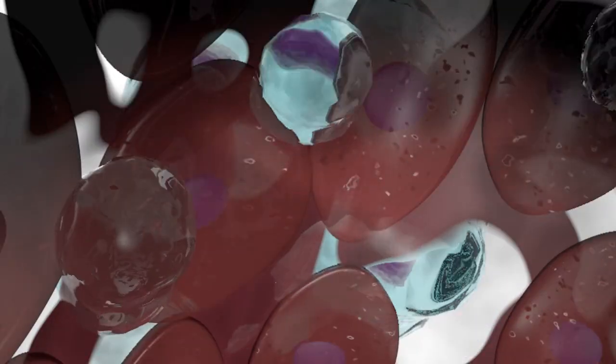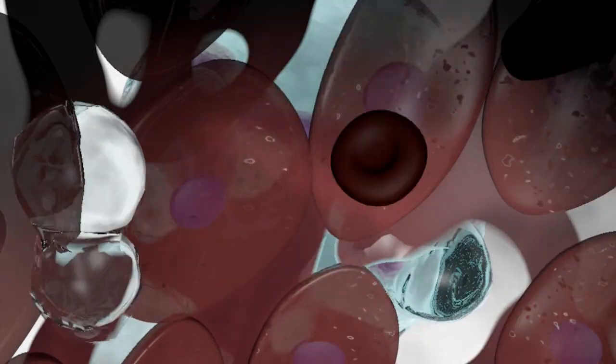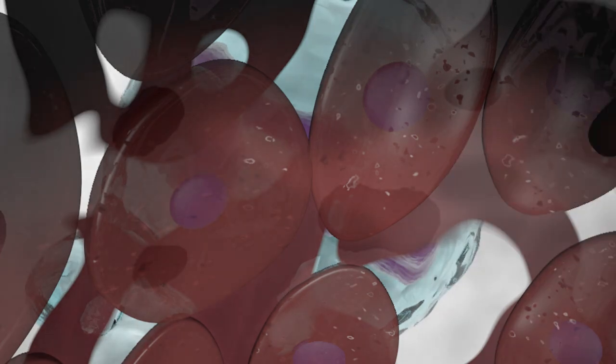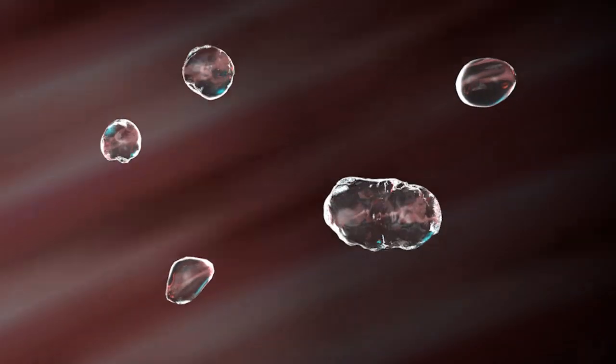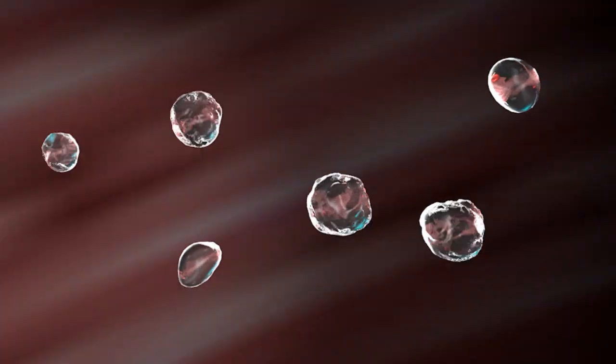The sheer force of blood flow then stretches these processes, which eventually break off to form platelets and barbell-shaped proplatelets. The proplatelets further differentiate into platelets by twisting and pinching along the midline.